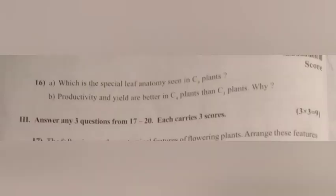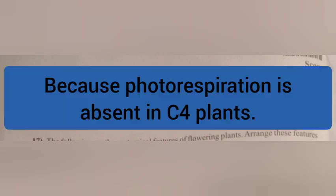Question 16. A. Which is the special leaf anatomy seen in C4 plants? Answer: Kranz anatomy. B. Productivity and yield are better in C4 plants than C3 plants. Why? Answer: Because photorespiration is absent in C4 plants.